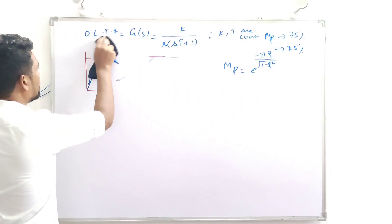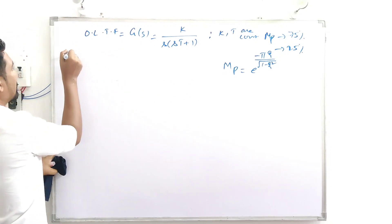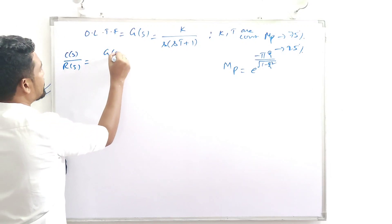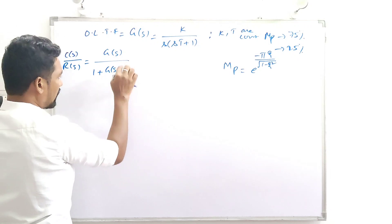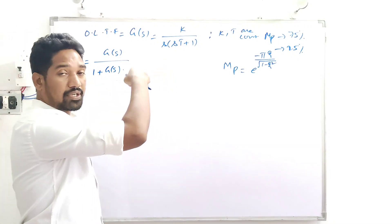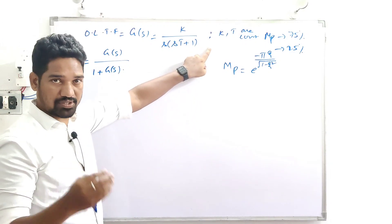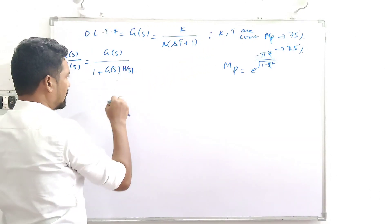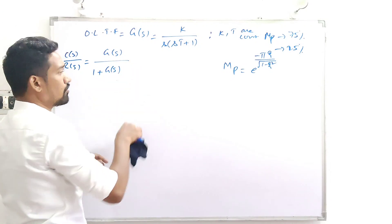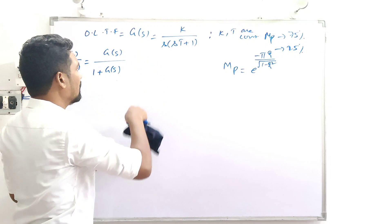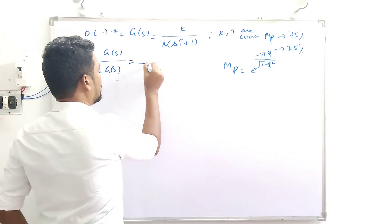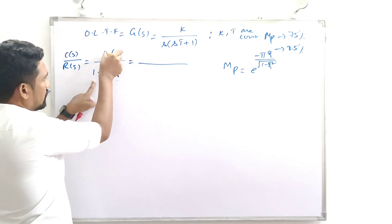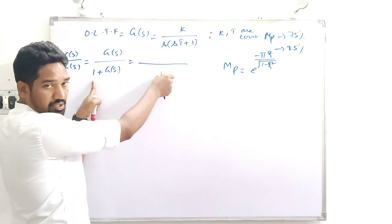Now let's find the closed-loop transfer function. C(s)/R(s) = G(s) / [1 + G(s)·H(s)]. This is a unity feedback system, so H(s) = 1. We substitute the open-loop transfer function into this expression and simplify the entire expression.